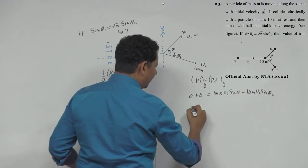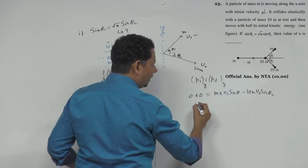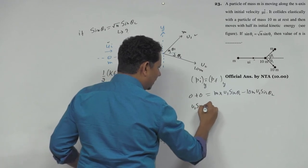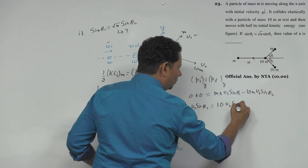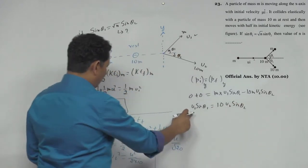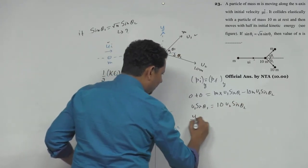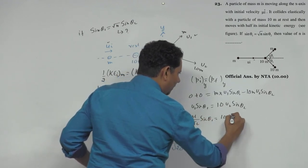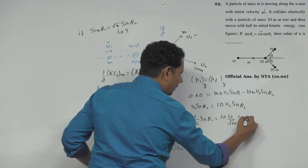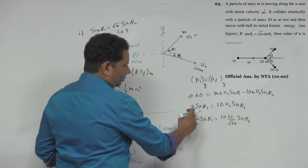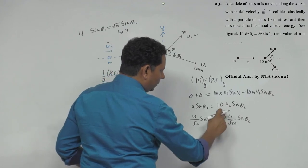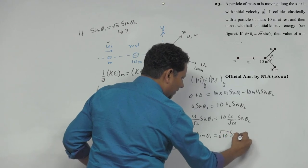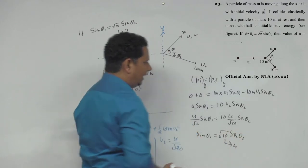Substituting u values: v₁sin θ₁ = 10v₂sin θ₂. So (u/√2)sin θ₁ = 10(u/√20)sin θ₂. Canceling u: (1/√2)sin θ₁ = 10(1/√20)sin θ₂. Simplifying: (1/√2)sin θ₁ = (10/√20)sin θ₂. This gives sin θ₁ = √10 sin θ₂. Therefore, n equals 10.